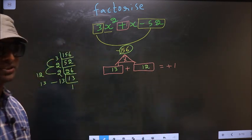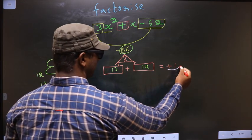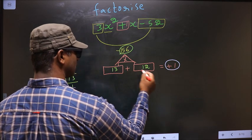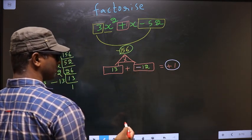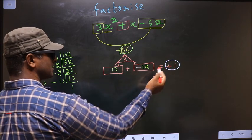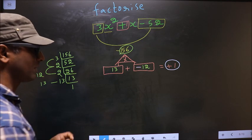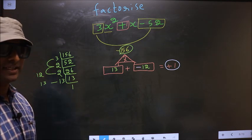Now we should adjust the signs. What I mean is, to get +1, I should put negative before 12, such that 13 minus 12 is +1. 13 into -12 is -156. So now we adjusted even the signs.